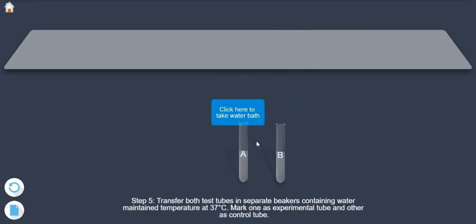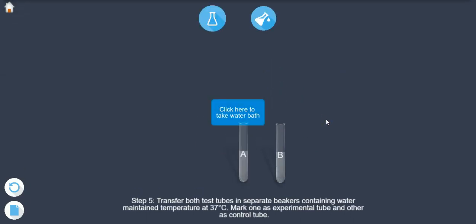Step 5: Transfer both test tubes in separate beakers containing water maintained at 37 degrees centigrade. Mark one as experimental tube and other as control tube.